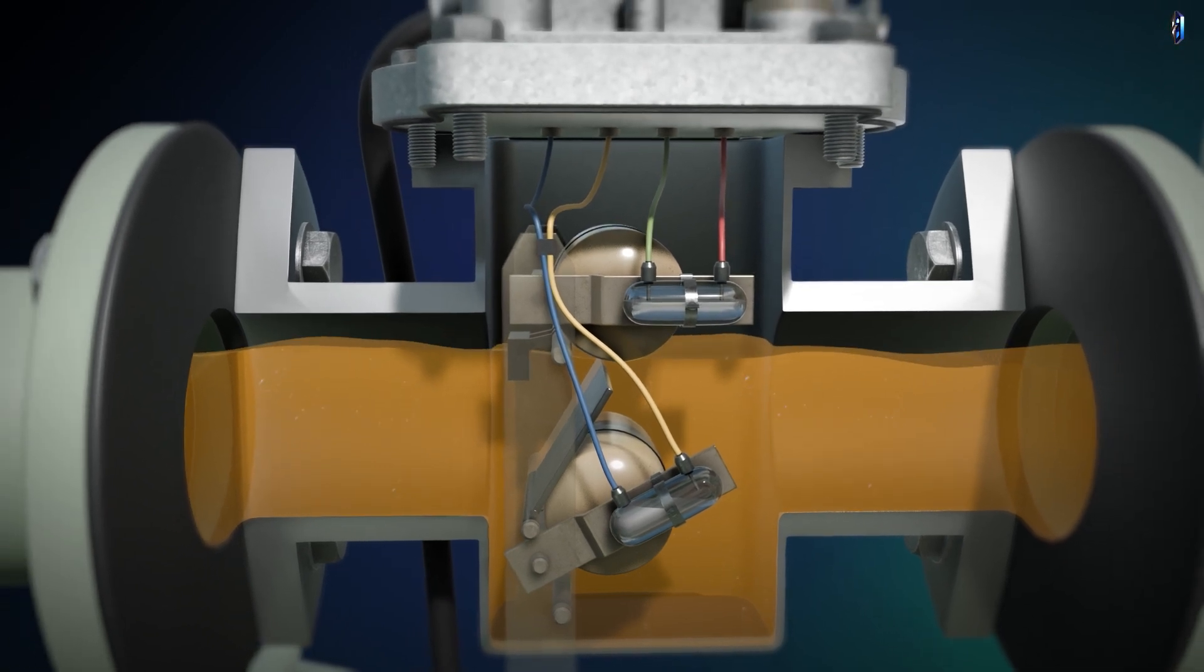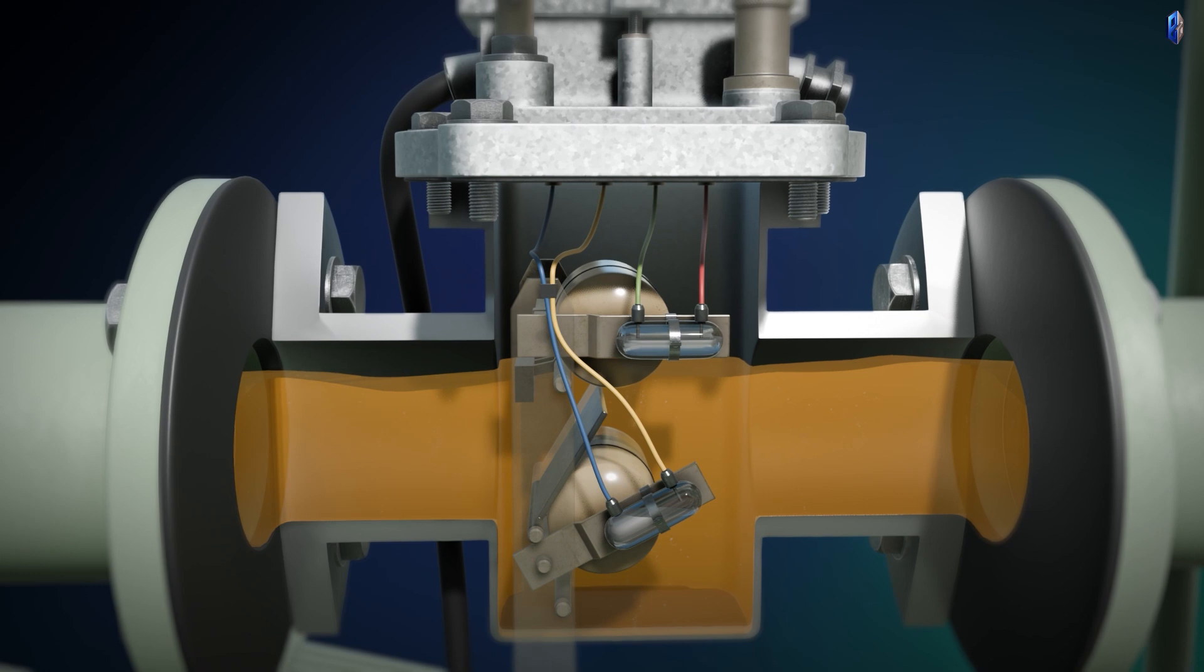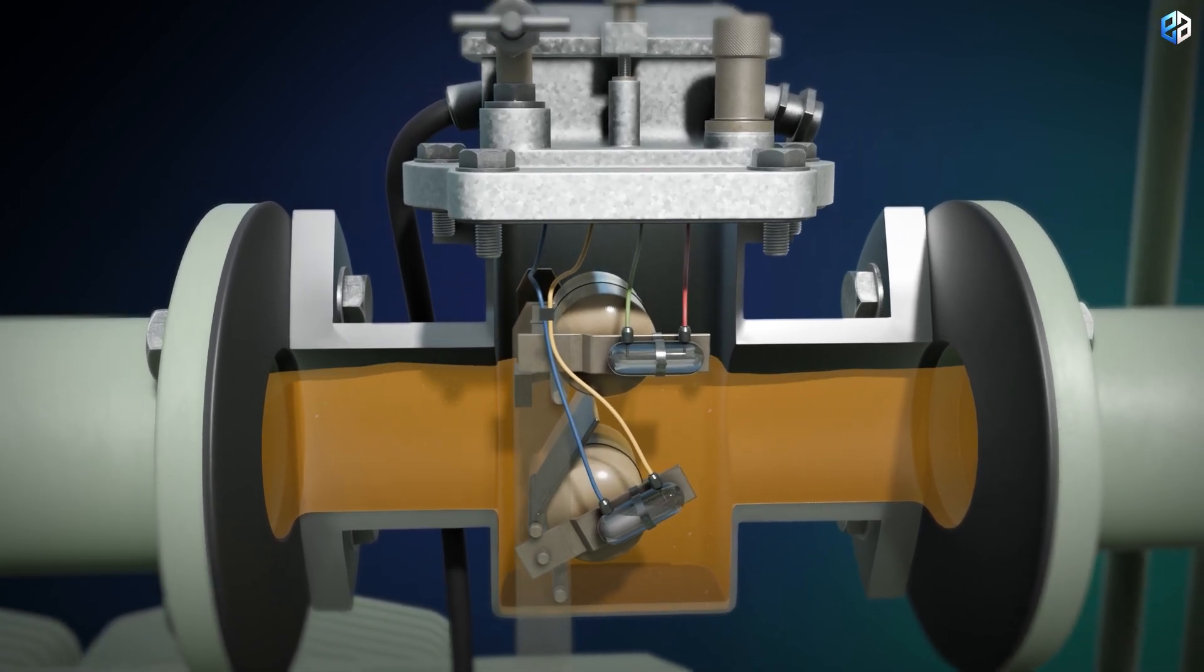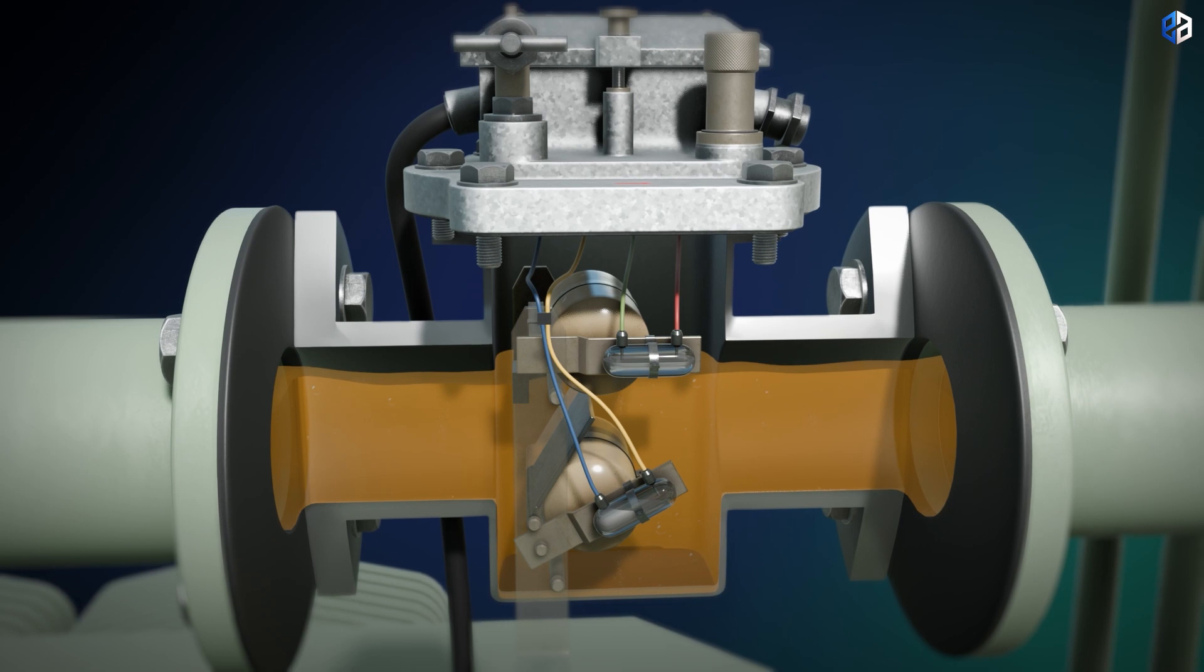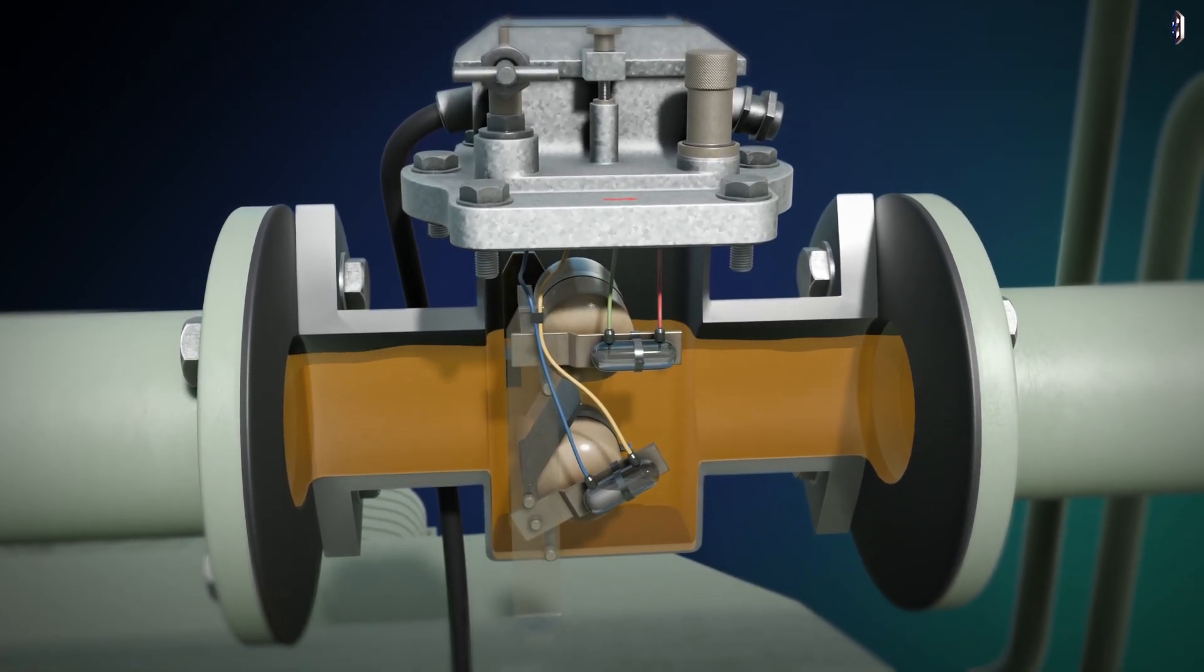The relay thus protects the transformer from further, more expensive consequential damage. As we can see, a Buchholz relay is not able to prevent a transformer fault, but in this case it protects the transformer from particularly severe damage by switching off quickly and reliably.